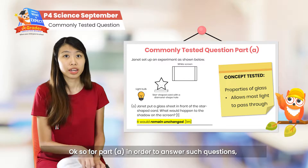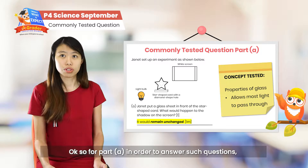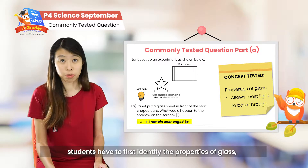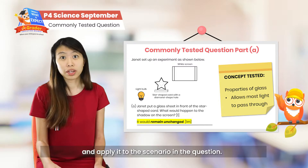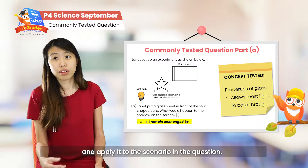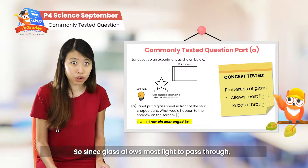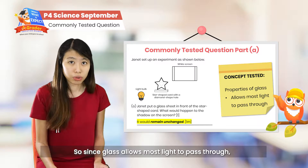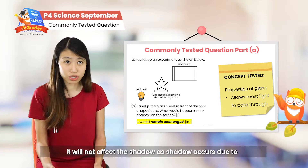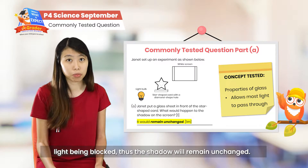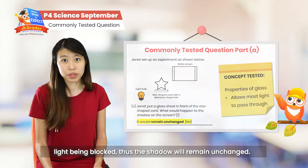For part A, students have to first identify the properties of glass and apply it to the scenario in the question. Since glass allows most light to pass through, it will not affect the shadow, as shadows occur due to light being blocked. Thus, the shadow will remain unchanged.